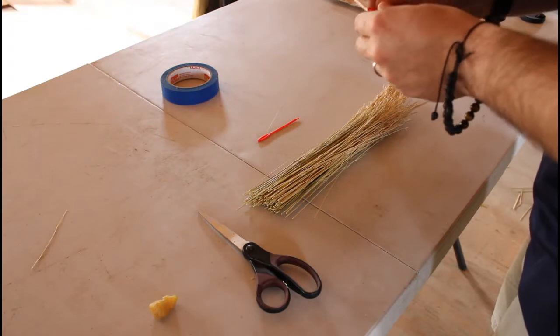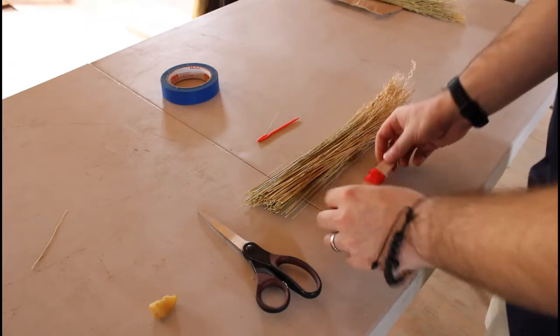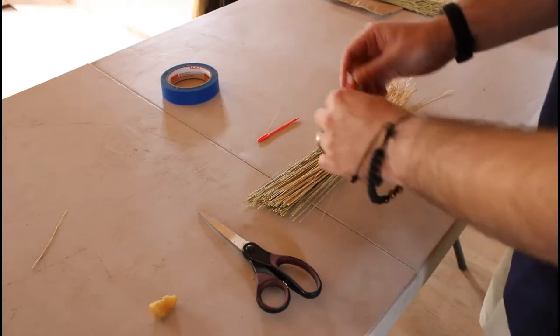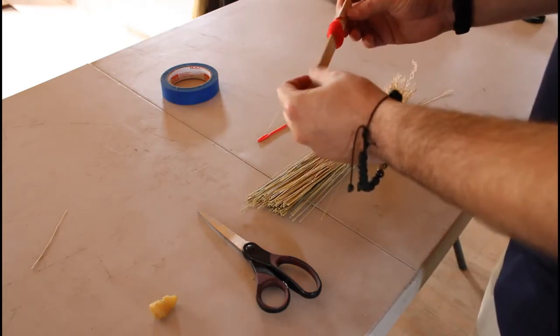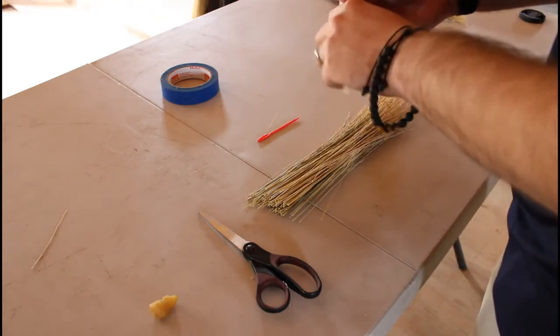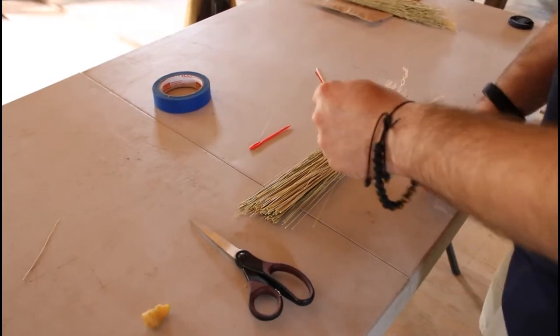Now we're ready to start making our whisk brooms. So the first step once we have all the parts of our kit out is we want to take this little craft stick with the red twine wrapped around it and we're going to take this piece of tape off of it so we can loosen up this twine.